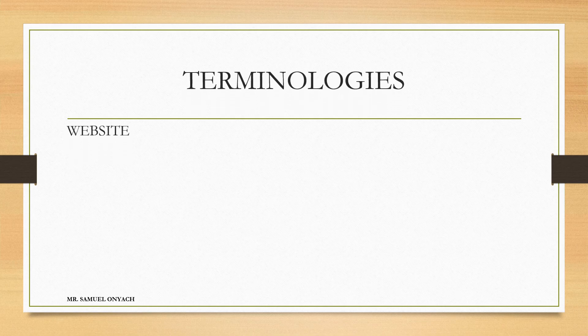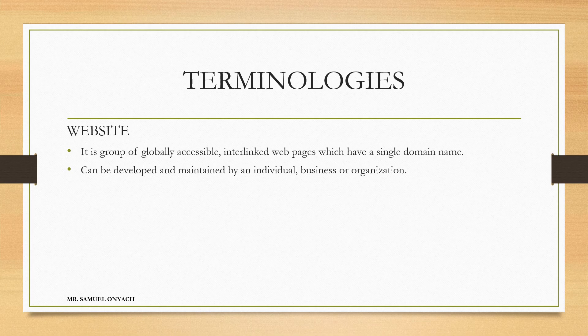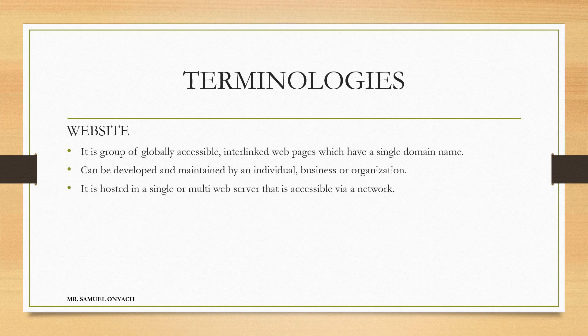The next terminology is the website. A website is a group of globally accessible, interlinked web pages which have a single domain name. For instance, www.ktc.ac.ke is a website that consists of several web pages sharing that single domain name — it is a collection of several pages that are interlinked. A website can be developed and maintained by an individual, a business, or an organization. It is usually hosted on a single or multi web server that is accessible via a network.